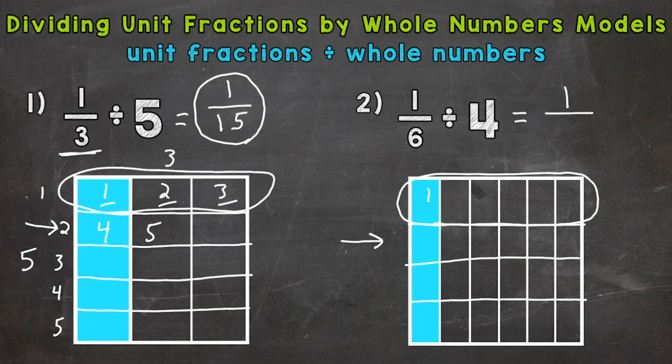Then we need to see how many total pieces there are. And we have a 4 by 6. So we could do 4 times 6 to get us 24. Or again, you can count the individual pieces if you'd like. Whatever works for you. And we get 1/24 as our answer.